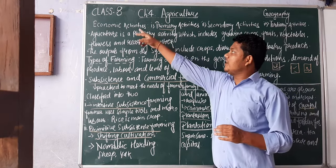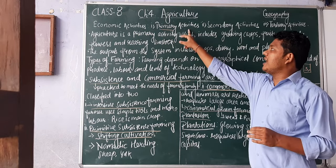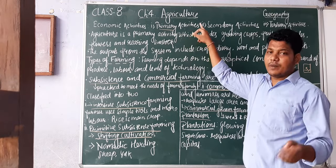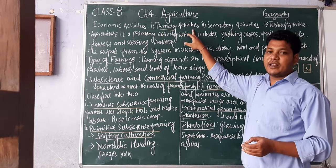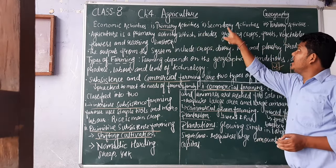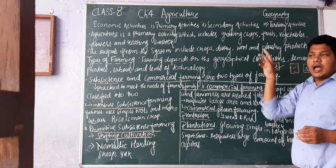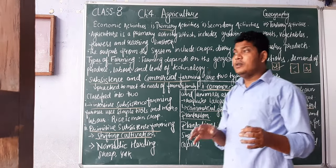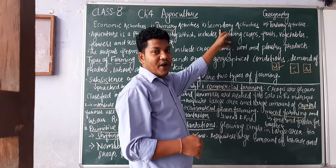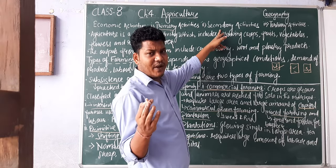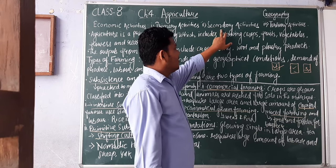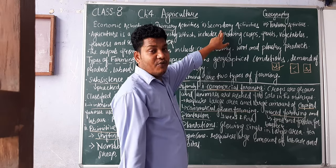First, we have primary activities. Primary activities are related to agriculture and agriculture products. Then we have secondary activities. Secondary activities are those involved in manufacturing — for example, manufacturing of paper, plastics, steel, and other products. All of these come under secondary activities.